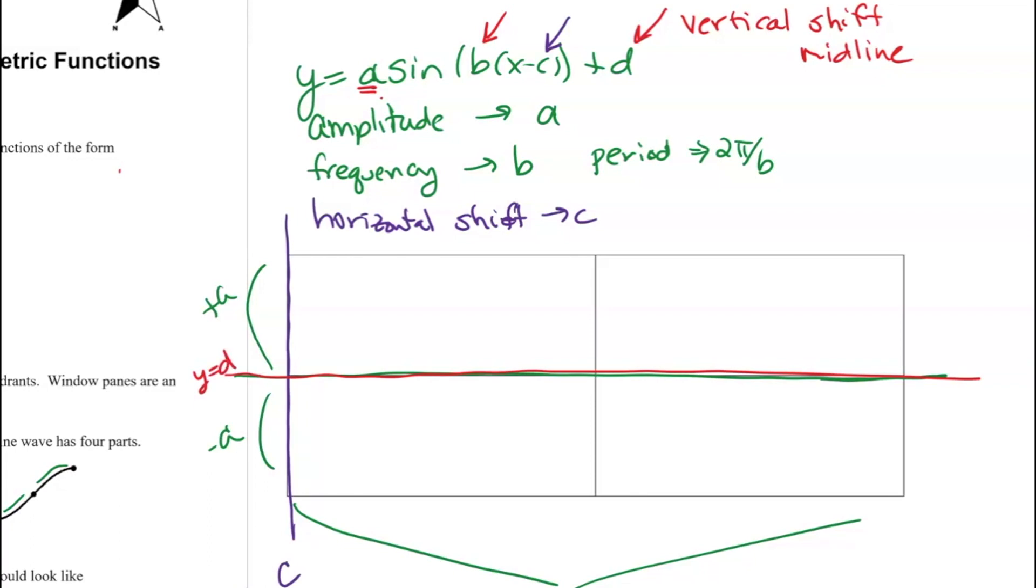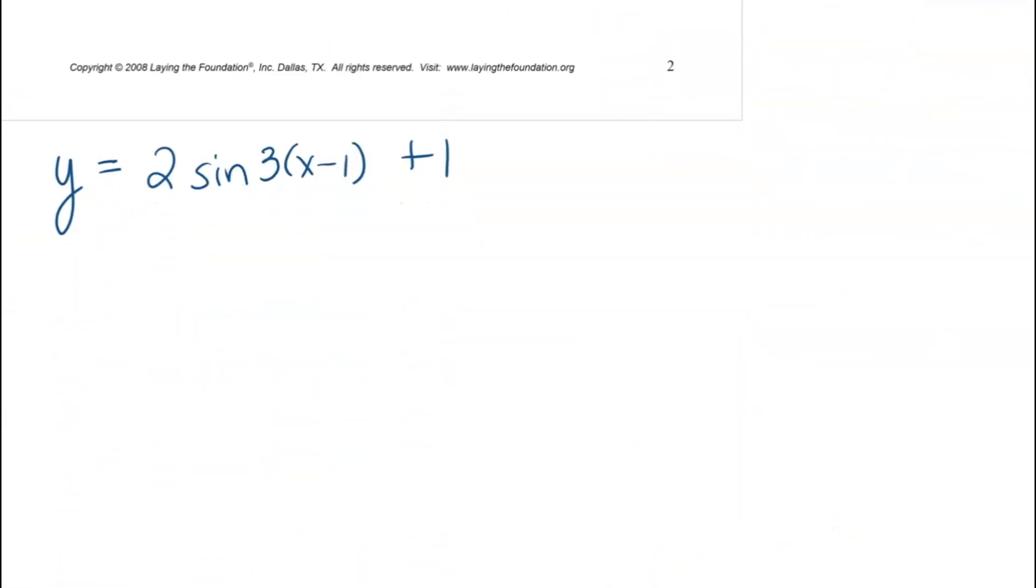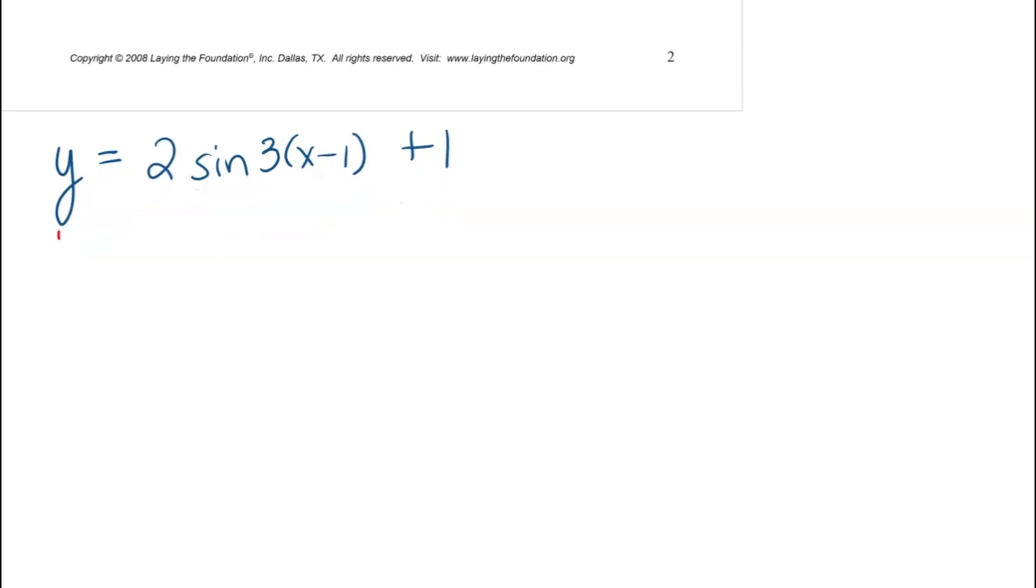We're going to use that idea and put it into a particular example. Here we have a is 2, b is 3, c is 1, and d is 1. So that means my amplitude is 2, my period is 2π over 3, my horizontal shift is 1, so I'm moving to the right one, and my midline or vertical shift is 1, so I'm up 1.